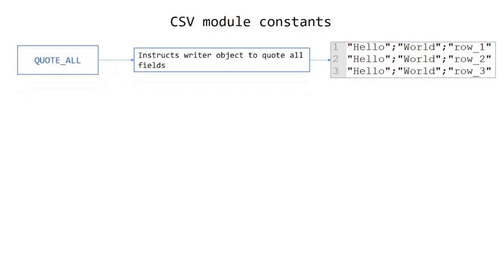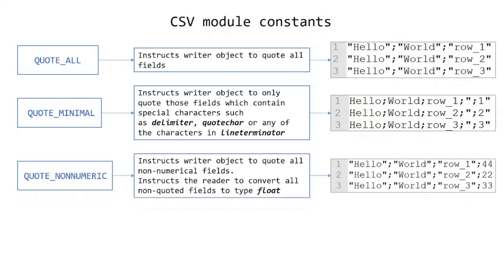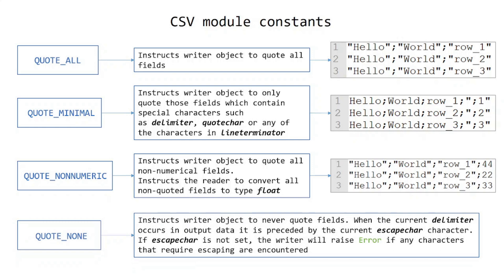QUOTE_ALL instructs the writer object to quote all fields. QUOTE_MINIMAL instructs the writer object to only quote those fields which contain special characters such as the delimiter, quotechar, or any of the characters in lineterminator. QUOTE_NONNUMERIC instructs the writer object to quote all non-numerical fields, and instructs the reader to convert all non-quoted fields to type float. QUOTE_NONE instructs the writer object to never quote fields — when the current delimiter occurs in output data it is preceded by the current escapechar. If escapechar is not set, the writer will raise an error if any characters that require escaping are encountered.